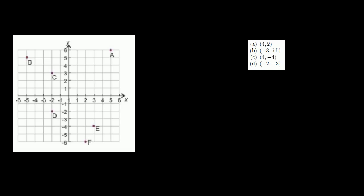Let's figure out what are the coordinates of these points. You have this point right here, A. Its x-coordinate — you just drop down to where it intersects the x-axis — x is equal to 5. So it's the point 5 comma 6. 5 comma 6.